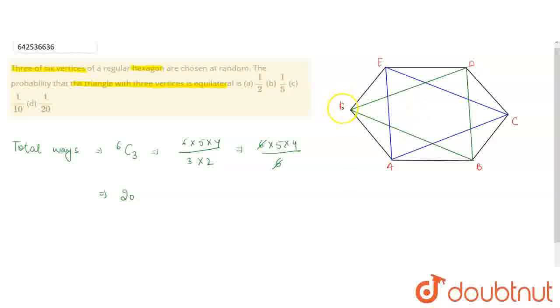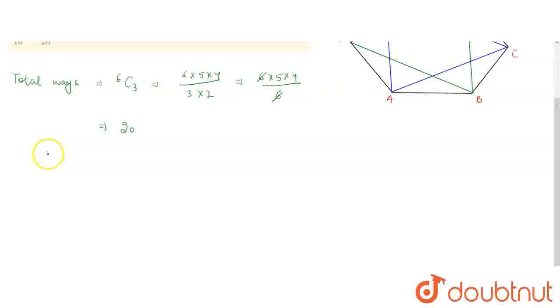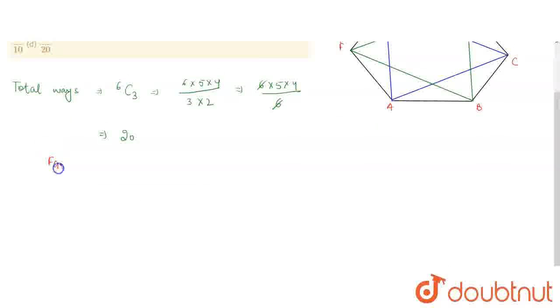These are the two equilateral triangles: triangle ACE and triangle BFD. The favorable ways are 2 because a hexagon has only 2 cases where we have an equilateral triangle.